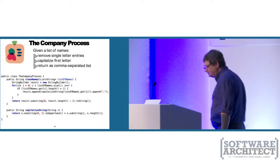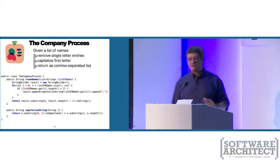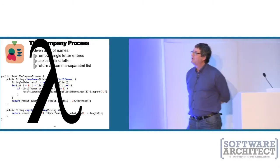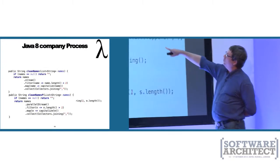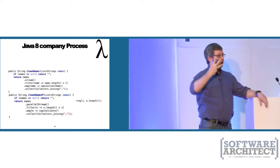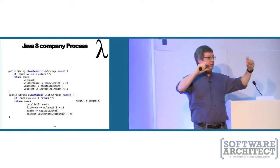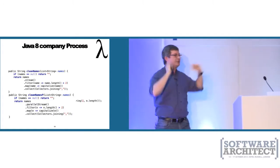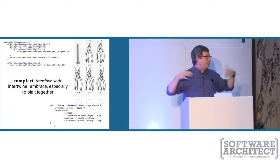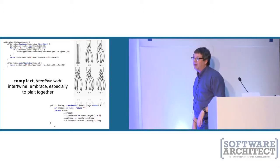Let's say you have this process: given a list of names, remove single-letter entries, capitalize the first letter, and return as a comma-separated list. An old-school Java developer writes one loop: for each name, if its length is greater than one, capitalize and append. This problem would be clearer with three separate loops — one to remove single-character entries, one to capitalize, one to concatenate — but you don't do that because it's screamingly inefficient to loop through everything three times. Now let's see what this looks like with Java 8 with lambdas and streams.